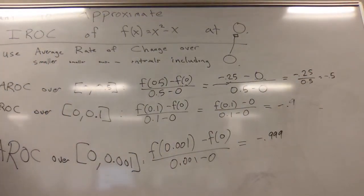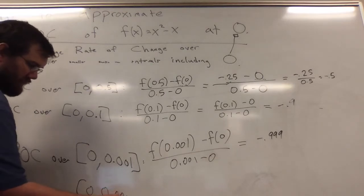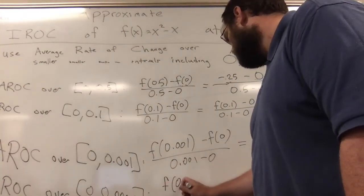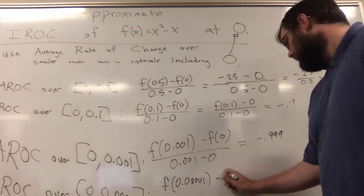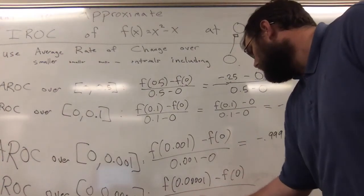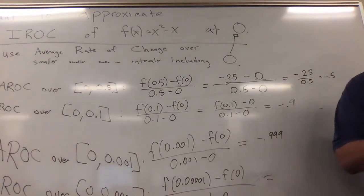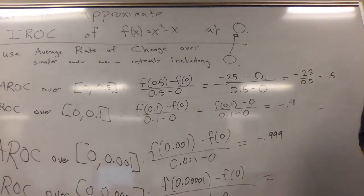But an even better approximation is the average rate of change over [0, 0.0001]. It gives me f(0.0001) - f(0) all over 0.0001 - 0.